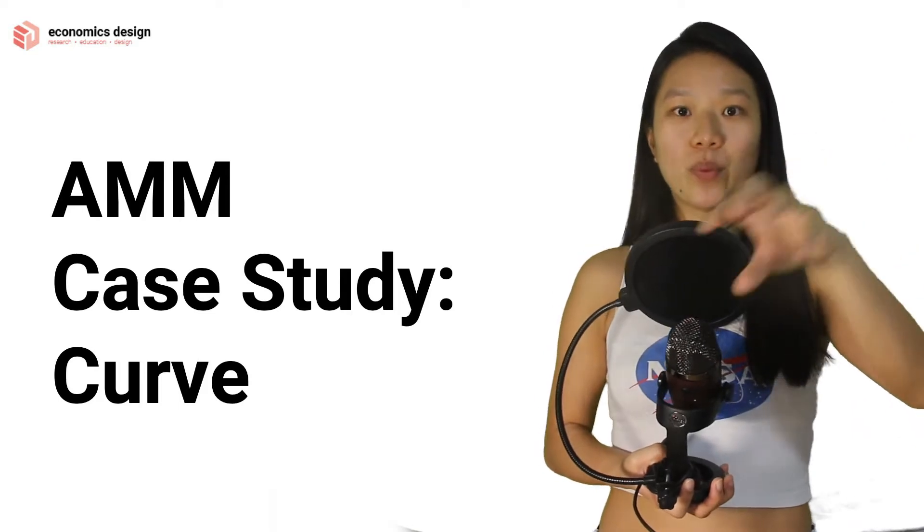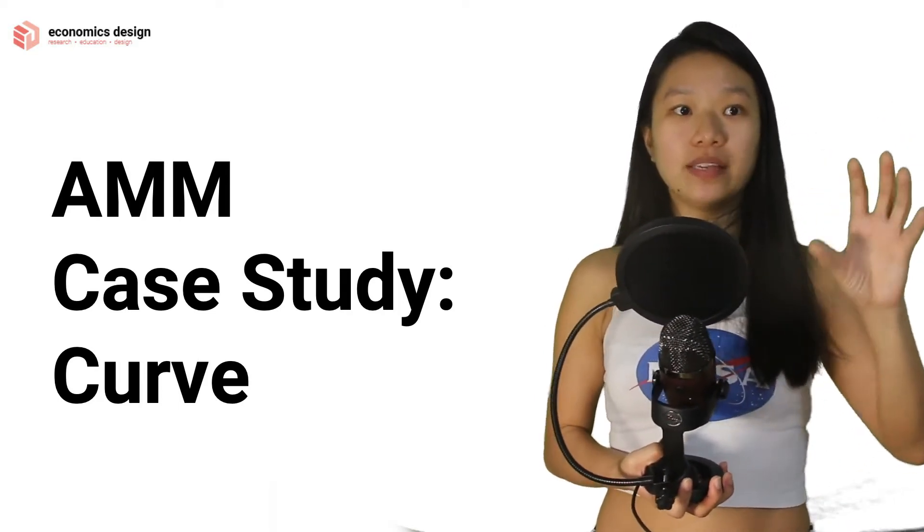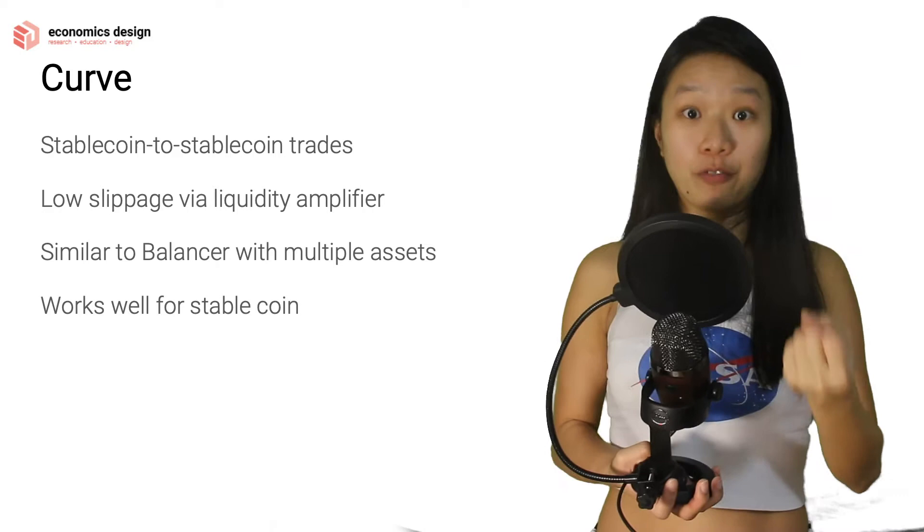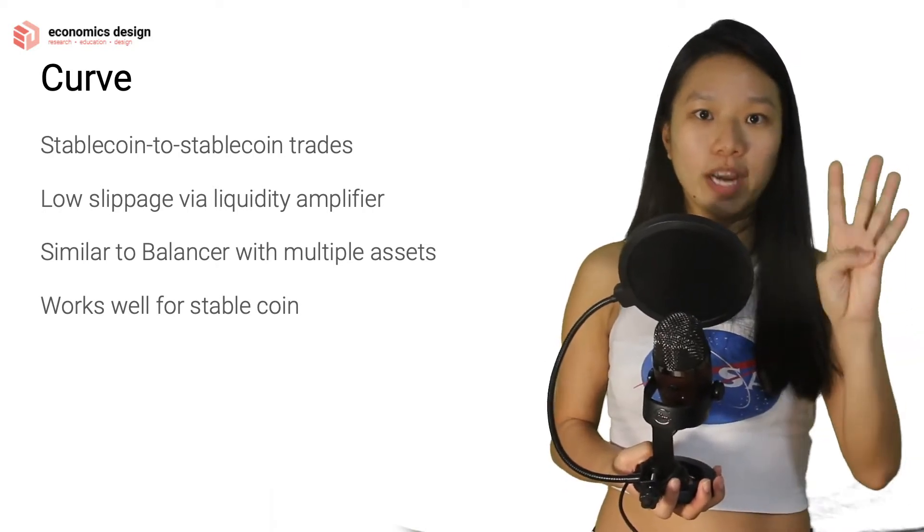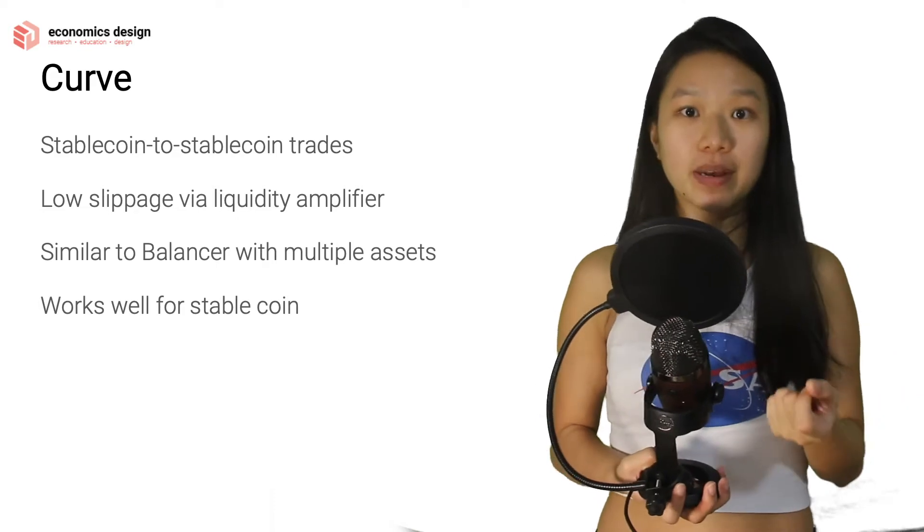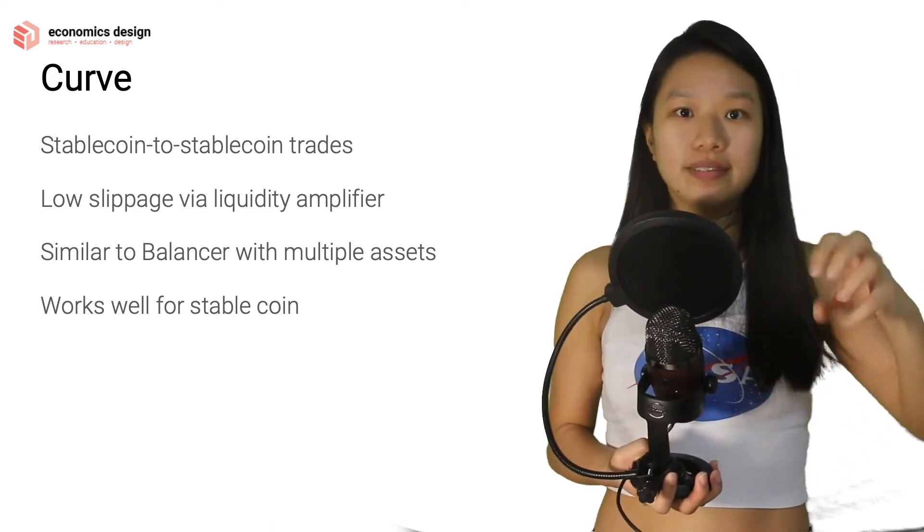So if we think of Balancer as having a lot of different tokens and giving different weights, the idea of Curve is similar but instead of x, y, z being different tokens. In the picnic basket for Balancer, you have wine, cheese and ham or wine, cheese and bread. In Curve's picnic basket, it works the same way but they are all similar assets.